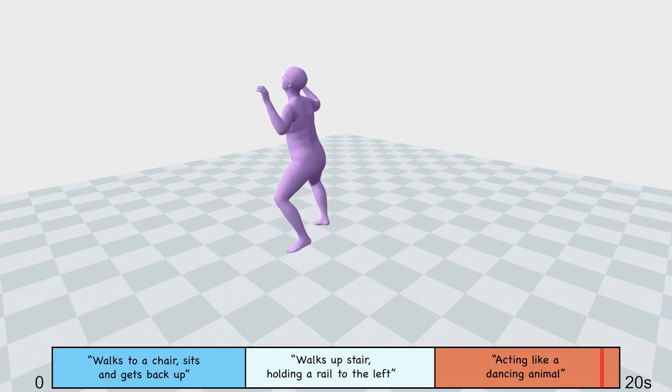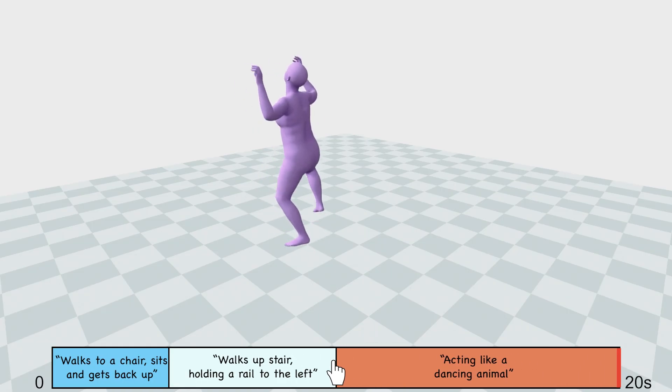Genmo's novel model design allows the user to edit the timeline, enabling motion generation with arbitrary lengths for each text description.